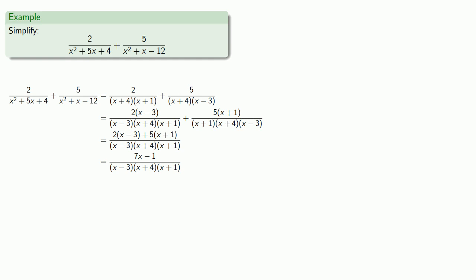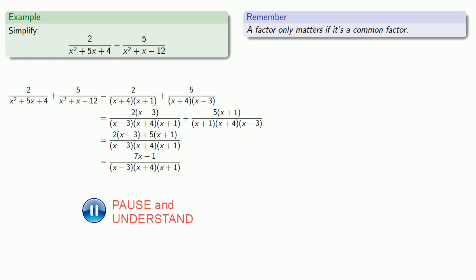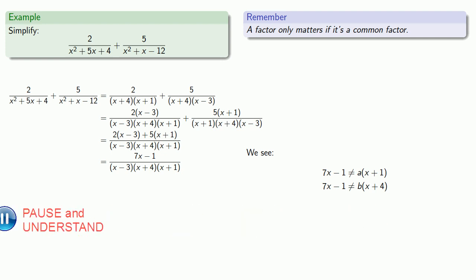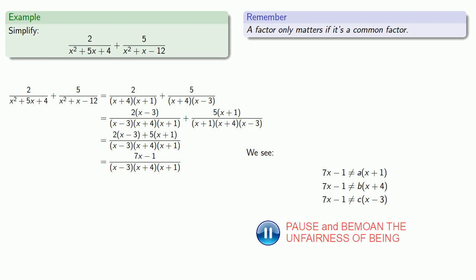So a useful thing to remember at this point is that a factor only matters if it's a common factor. Since we left our denominator in factored form, we know that the only factors that matter in the numerator are x minus 3, x plus 4, or x plus 1. And we might take a look. We see that 7x minus 1 can't be a times x plus 1, and 7x minus 1 can't be something times x plus 4, and 7x minus 1 can't be something times x minus 3. And what this means is that there's no chance that 7x minus 1 will have a factor in common with the denominator. So we don't care how or even if it factors, we can leave our answer in this form.